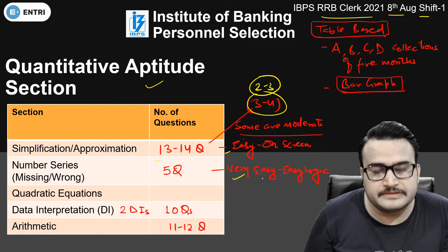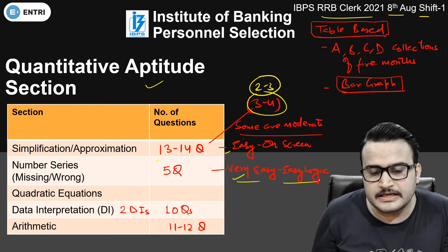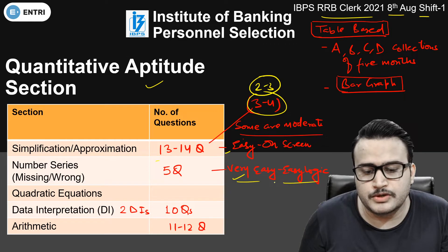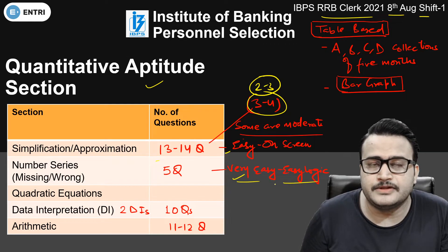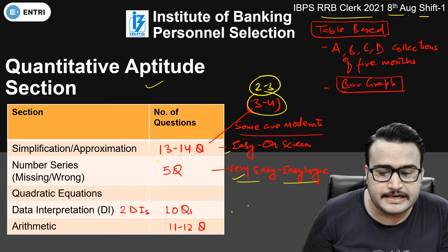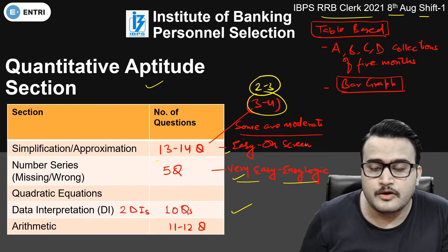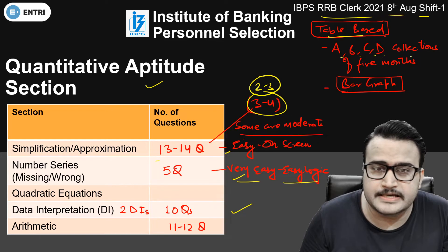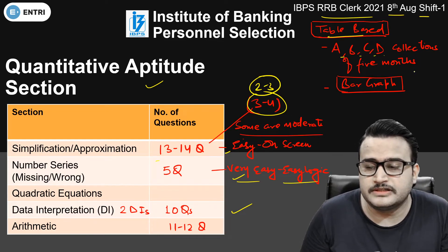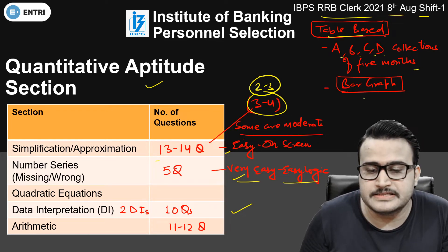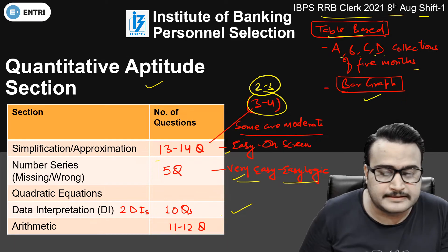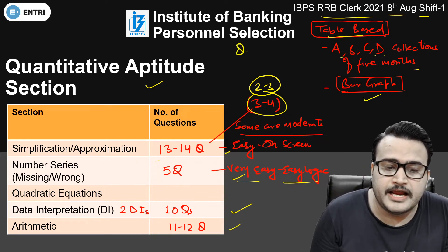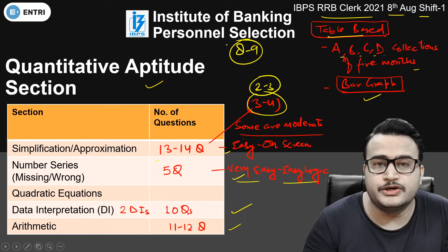After that, number series — very easy, easy logic was there. Students can find the logic very easily within a few seconds in the number series. Data Interpretation — 10 questions were there. One table-based DI with A, B, C, and D having different collections in 5 different months. There was also a bar graph DI. In arithmetic, 11 to 12 questions were seen, whereas 8 to 9 questions were easily doable.